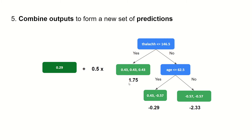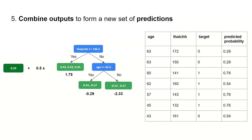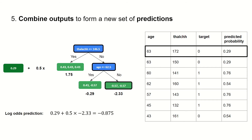We have calculated the output and put it beneath each of the leaves. Here we introduce a learning rate of 0.5 to reduce overfitting. Let's now go through an example of how we can use our combined outputs to come up with a predicted probability for each of our entries. So for our first entry, we've got a predicted probability of 0.29. How do we arrive at that? First, we calculate the log odds prediction.